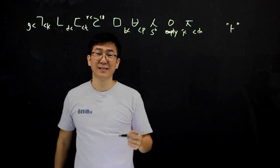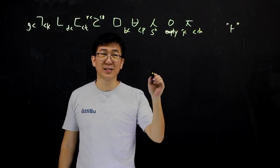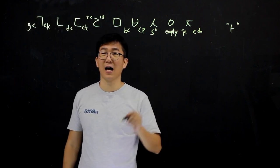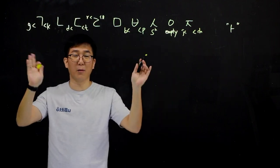Okay, repeat. Ka, na, da, ra, ma, ba, sa, a, ja. Ka, na, da, ra, ma, ba, sa, a, ja. Ka, na, da, ra, ma, ba, sa, a, ja. These are the plain and basic sounds.